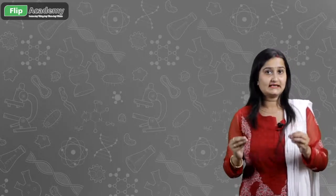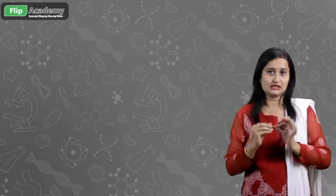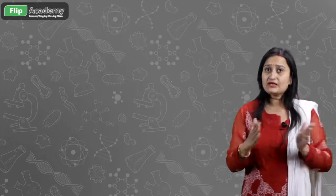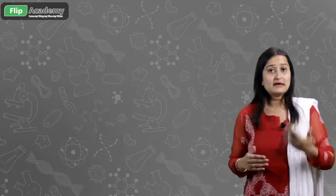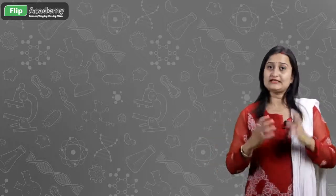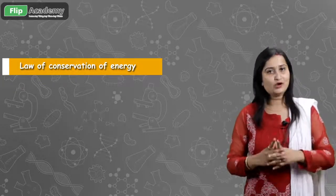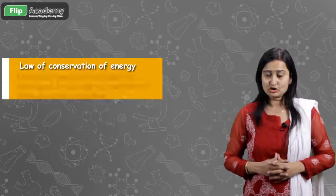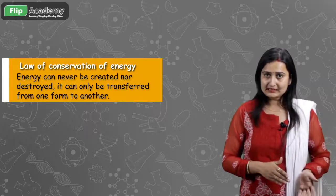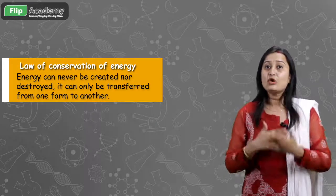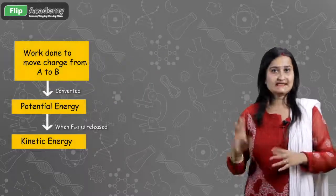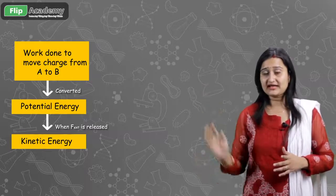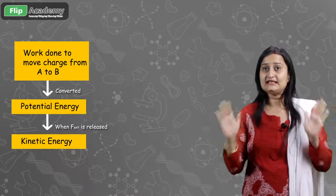We have talked about the electrostatic energy stored in the charge. At every point, the kinetic energy and potential energy must be constant — this is called the law of conservation of energy. According to this law, energy can neither be created nor destroyed, but can only be transferred from one form to another. The flow chart demonstrates everything we have studied so far.